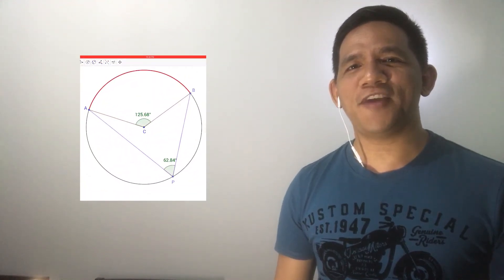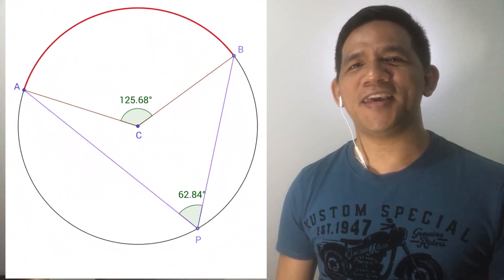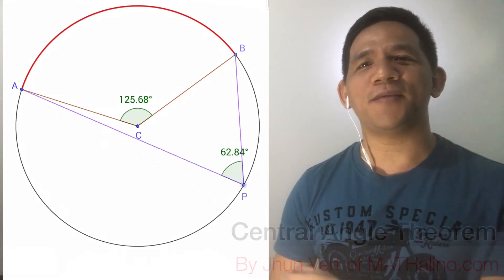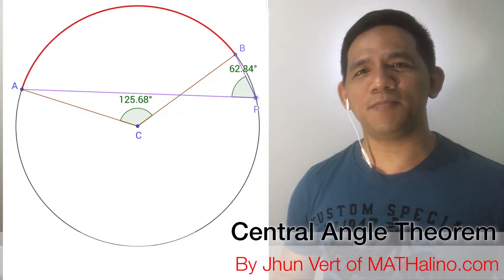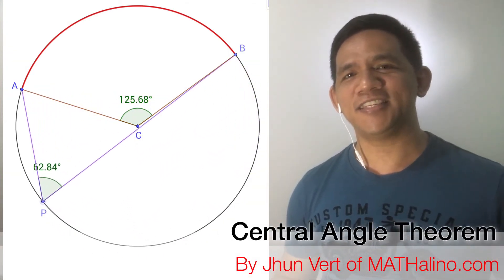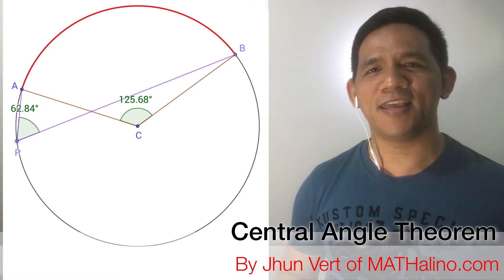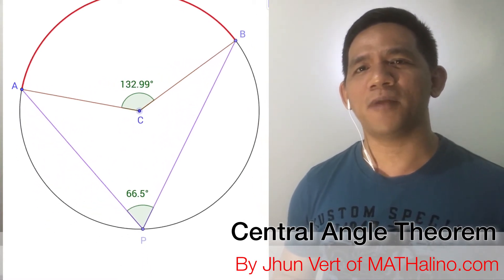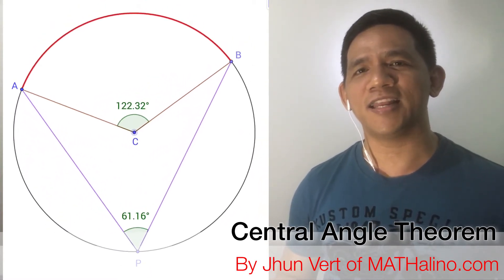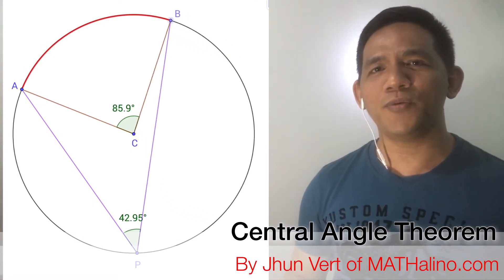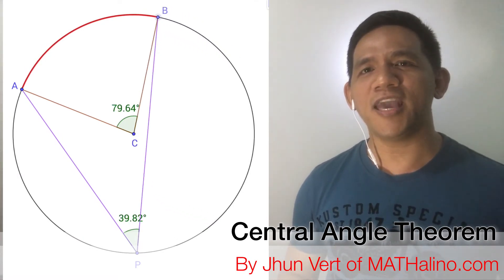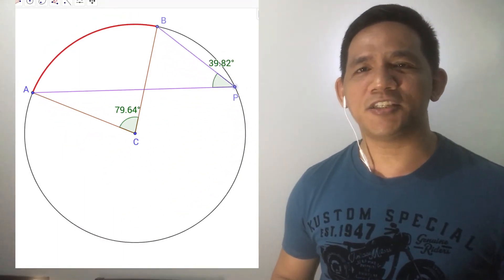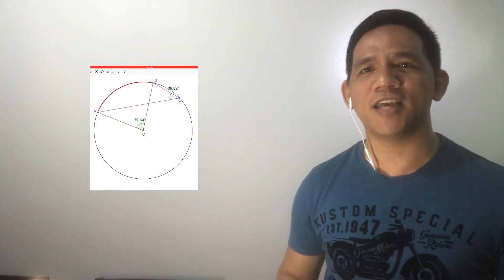One theorem on circles never failed to fascinate me. It is called the Central Angle Theorem. It is about the relationship between the central angle and its inscribed angle. If these two angles subtended or intercepted the same arc on the circle, the central angle is always twice the inscribed angle. Let's see how it is derived and check some of its applications.